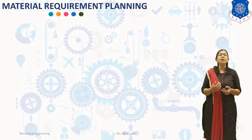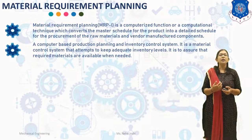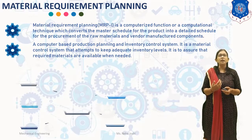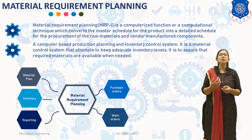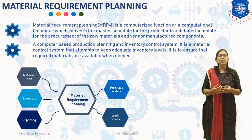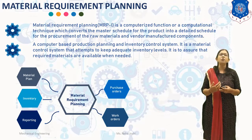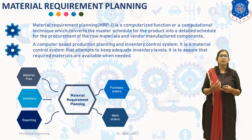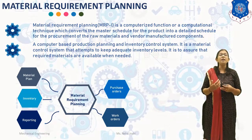What is Material Requirement Planning? Material Requirement Planning, which is also known as MRP-1, is a computerized function or a computational technique which converts the master schedule for the product into a detailed schedule for the procurement of the raw material and vendor-manufactured components. MRP is a computer-based production planning and inventory control system. It is a material control system that attempts to keep adequate inventory levels.